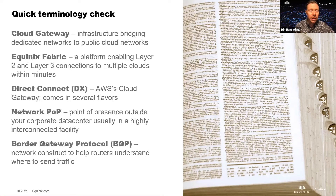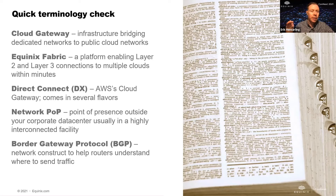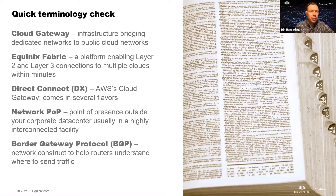Direct Connect comes in several flavors. We're going to talk about one flavor today; if you want to dive deeper into the others, I suggest engaging your solutions architect at Equinix. We also use the phrase network point of presence, or network PoP — those were the two points of presence on the East Coast and West Coast in the first diagram. That's really the brain of the routing for each region. We run routing through those to keep traffic local and reduce latency. And then the last term is BGP. In order to exchange routes with these cloud gateways, they want you to talk BGP — static routes have largely gone the way of the dinosaur for cloud deployments.